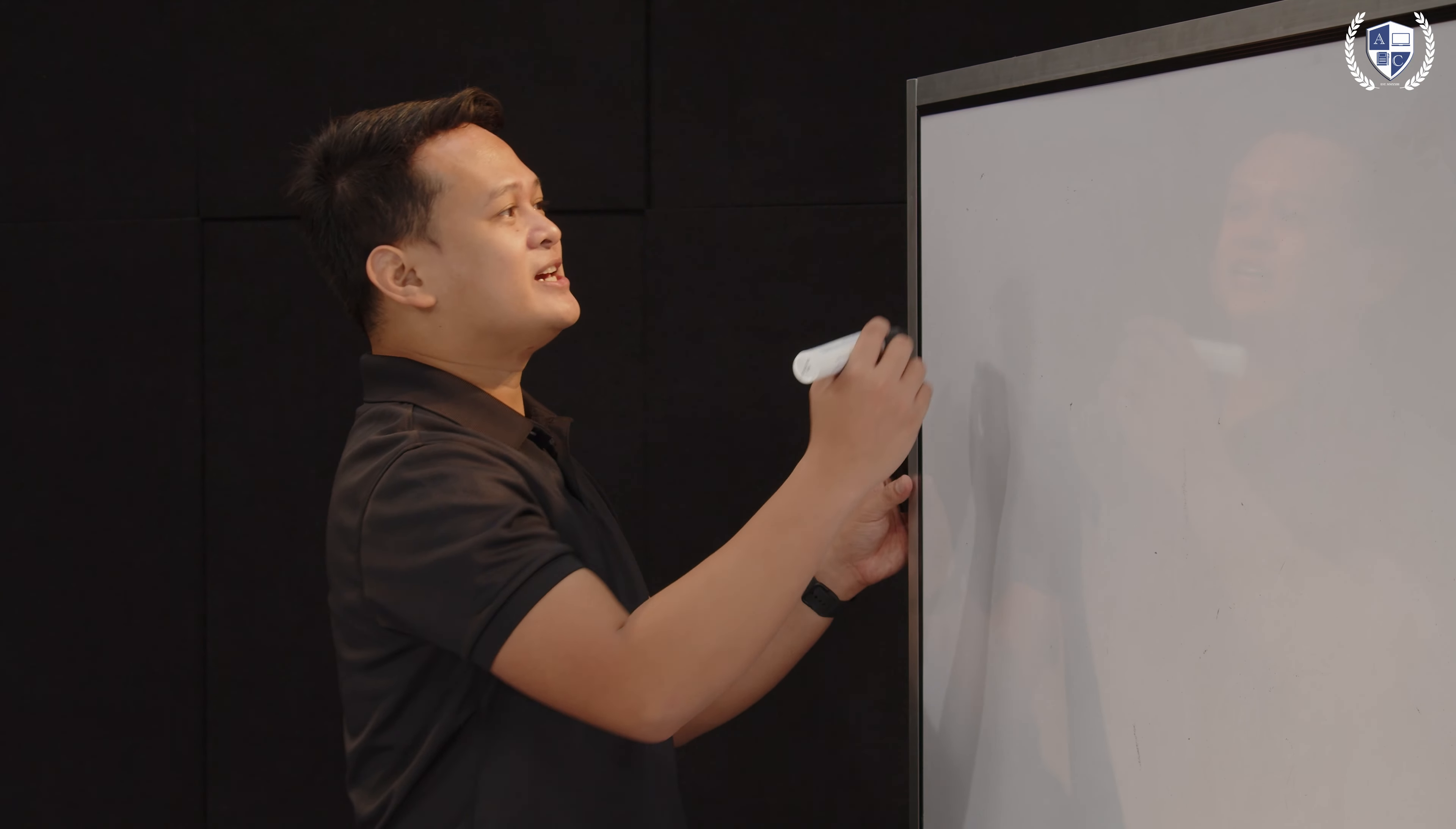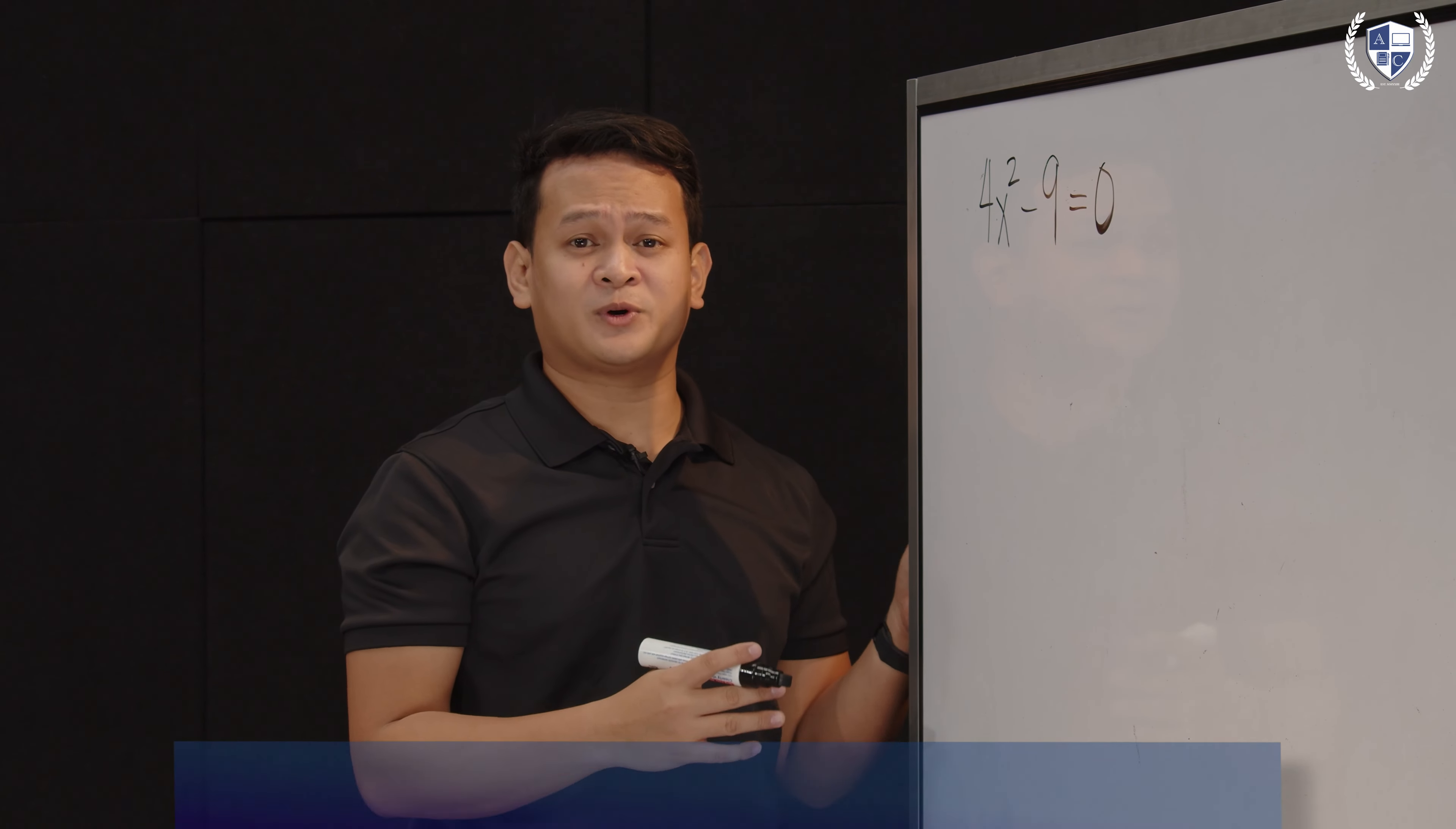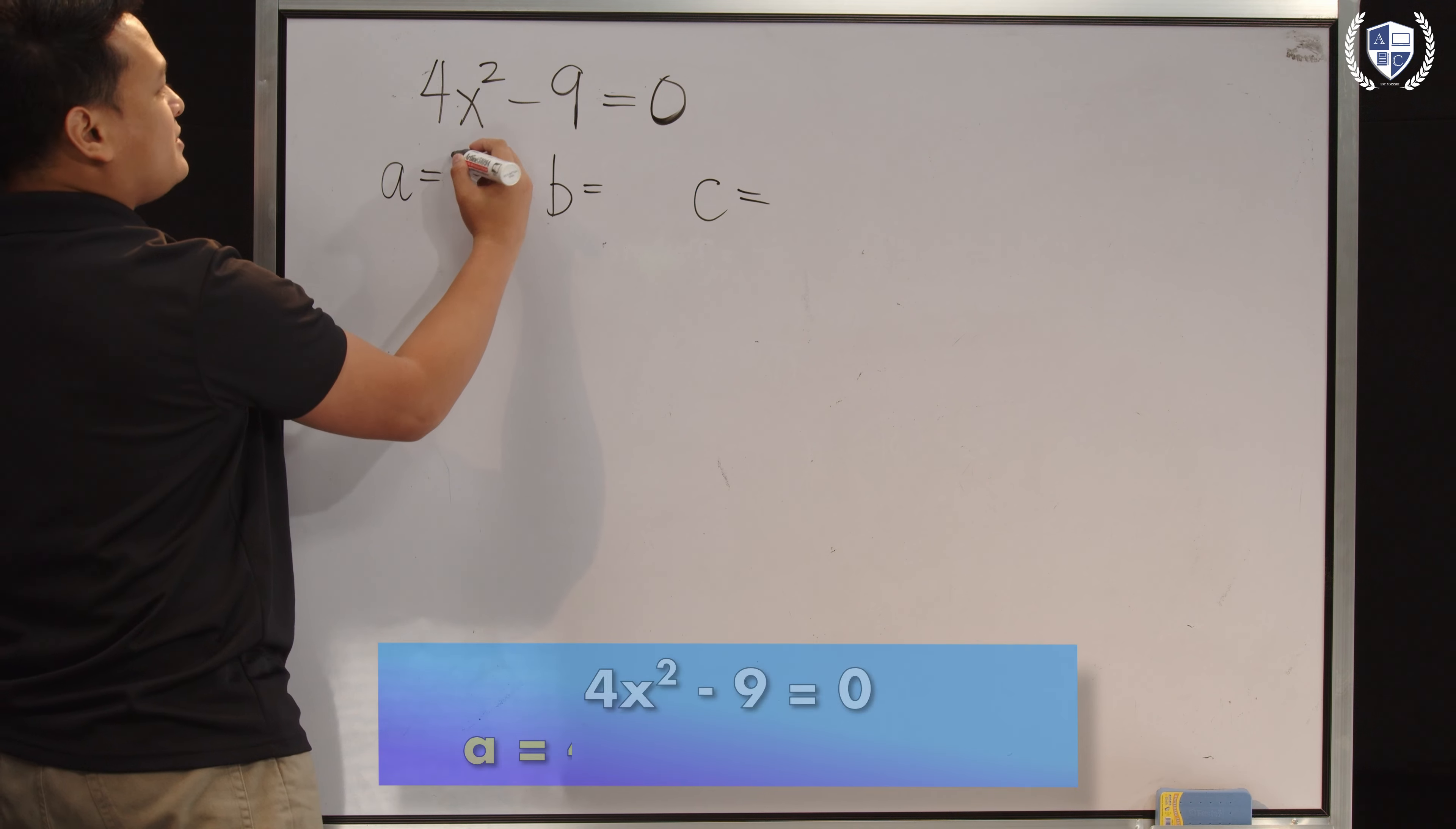Okay, so let's have our last example. Let's say our equation is given by 4x squared minus 9 equals 0. Is this in standard form? Yes, yes it is. So therefore, tignan na natin ano ba yung values ng A, B, and C natin dito.